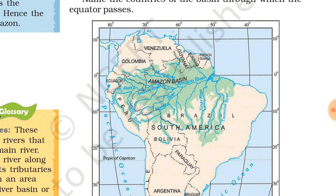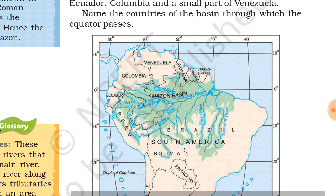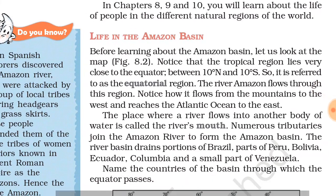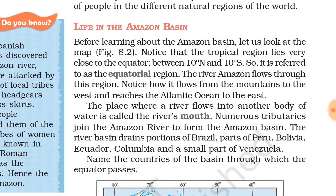The Amazon Basin covers Ecuador, Peru, and Bolivia. This is the Amazon Basin. Now we will see how life is in the Amazon Basin. The Amazon lies along the equator, between 10 degrees north and south - this is our equatorial region.